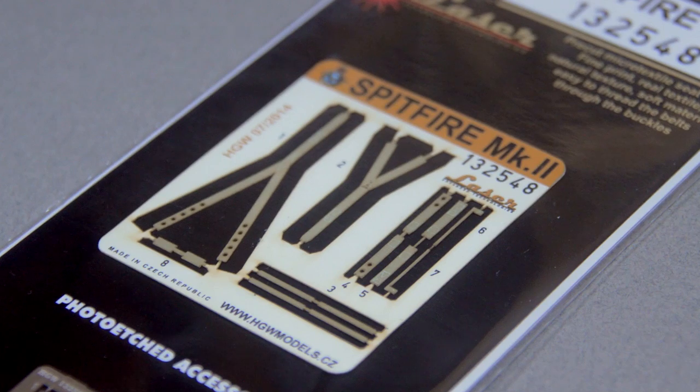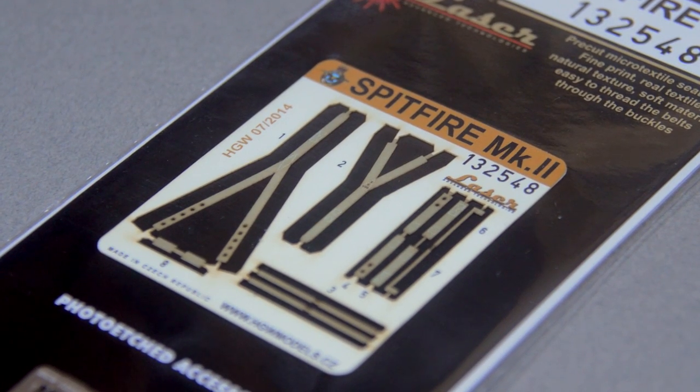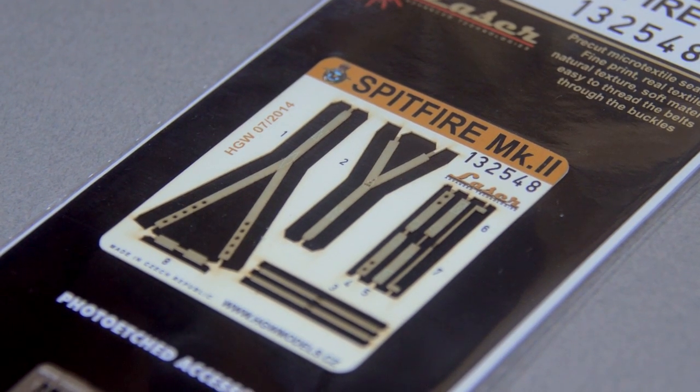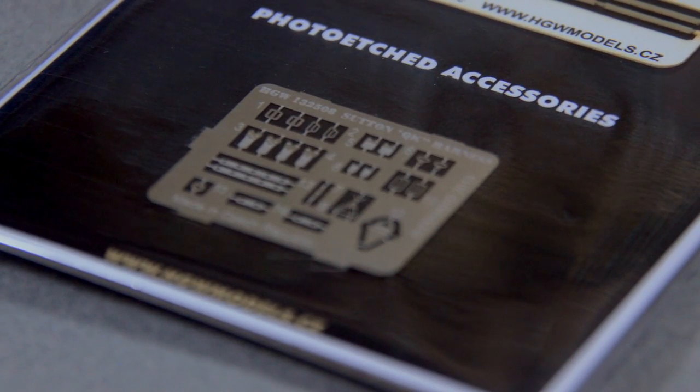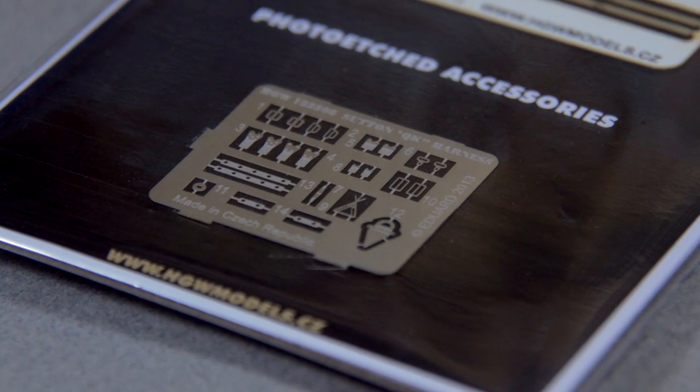This detail set is comprised of two different parts: one pre-cut micro-textile seatbelt set and one photo-etched buckle set from Edward.